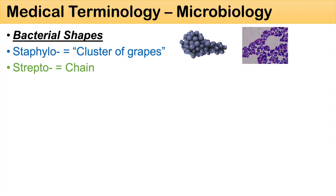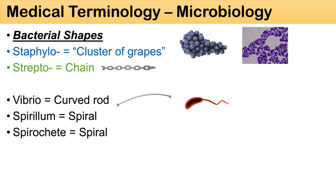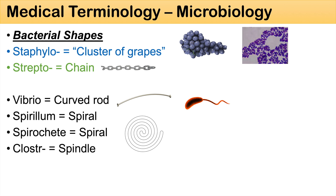Another very common one is strep or strepto, which means chain — the bacteria are lined up in a chain. Vibrio means a curved rod — you can think of vibrio cholerae, which is in the shape of a curved rod. Other ones include spirillum and spirochete, both related to a spiral structure. And clostry means spindle — you can think of clostridium difficile.